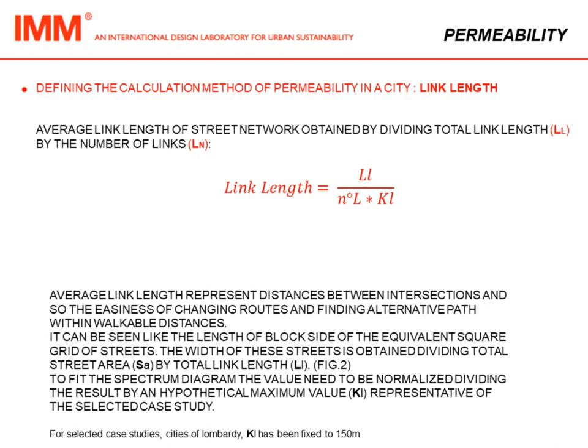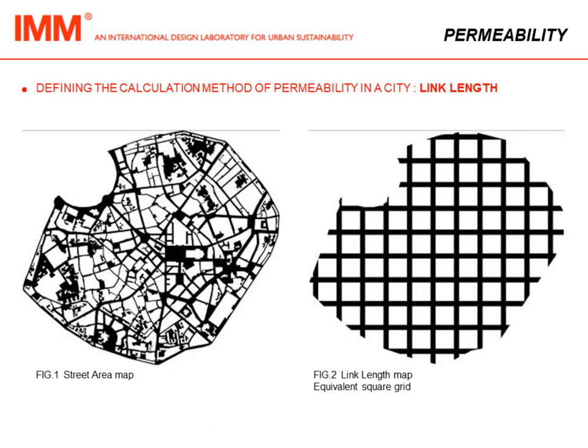To fit our spectrum diagram, the values need to be normalized by dividing the results by a hypothetical maximum value representative of the selected case studies. For the cities of Lombardy, the maximum link length KL has been fixed at 150 meters. These two maps represent the street area and the link length map, which is the equivalent square grid of the previous picture.